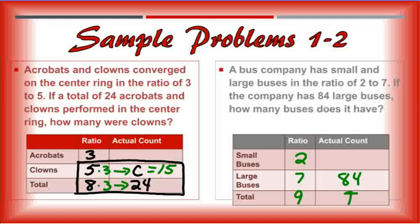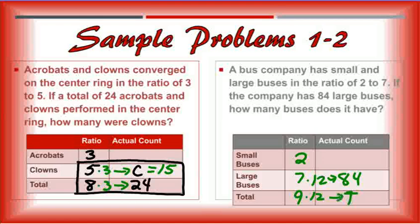Let's just see, is there a relationship between 84 and 7? There is. Seven times 12 gives you 84. So we would have 9 times 12. That would give us our total, which is 108 buses.